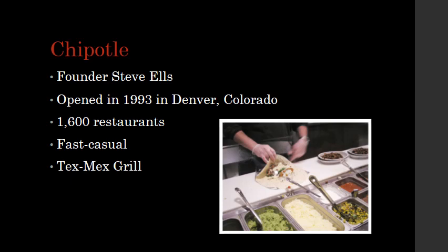Chipotle is a Tex-Mex grill. As you can see in the photo, there are many fresh ingredients like salsa, corn, shredded cheese, and avocado. These can all be put into a customizable meal — either a burrito, a bowl, tacos, or a salad.